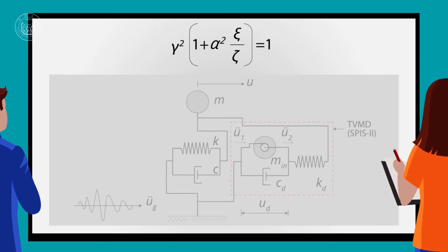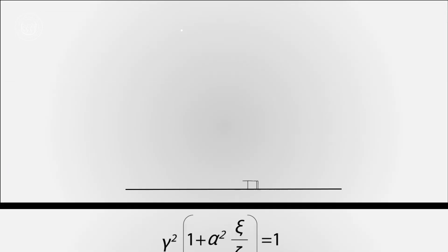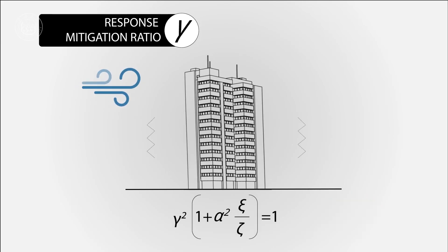This equation also lays the foundation to a new design strategy for inertor systems. In this equation, the response mitigation ratio is represented by gamma, and the damping deformation enhancement factor is represented by alpha.